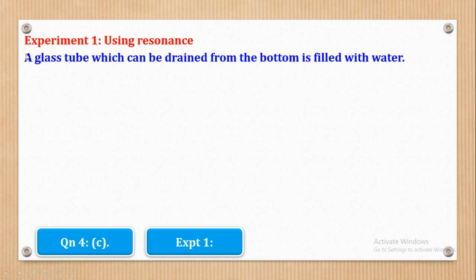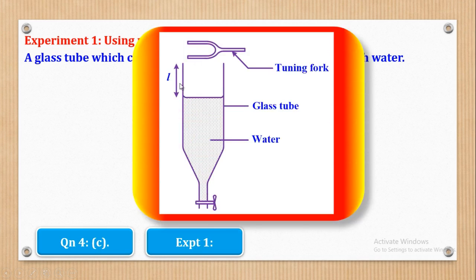In this experiment, a glass tube which can be drained from the bottom is filled with water. This is the glass tube, and at the bottom there is a tap — whereby when you open it, the water can flow out. So it means that this glass tube can be drained from the bottom.